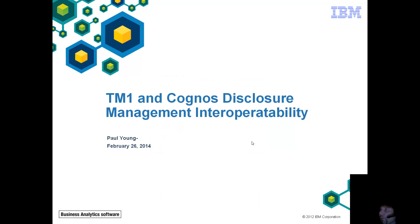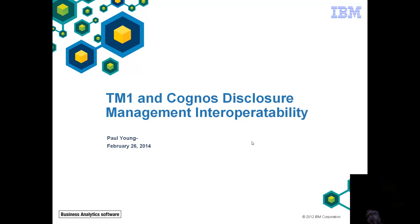Good evening everyone. My name is Paul Young. I'm with the Proven Practice team with expertise in the financial performance management area. Over the last several months I've been doing a lot of work on interoperability, especially with TM1 being the focal point. And Cognos Disclosure Management, which is basically an application where we can start building objects to generate specific reports as part of your soft close or regulatory filings.